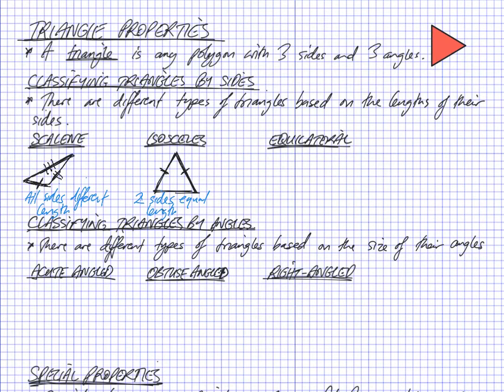And an equilateral triangle, it's sort of in the name there, equilateral equal. So an equilateral triangle is one where all the sides are the same exact length. So all sides same length.